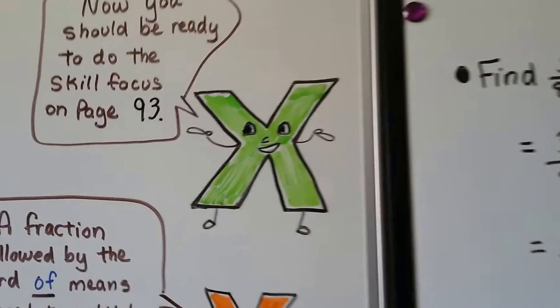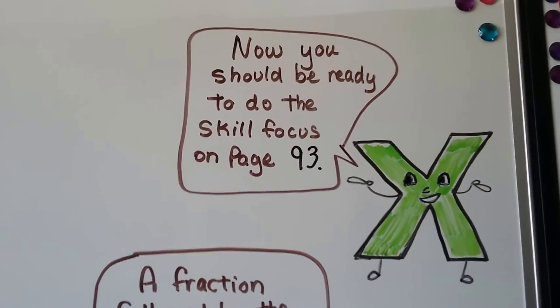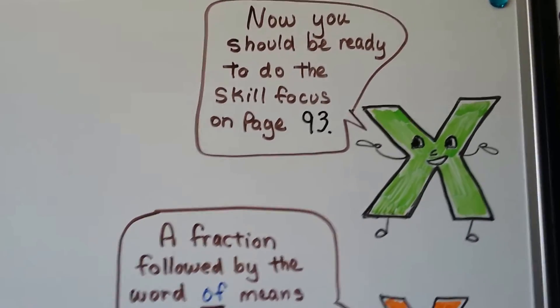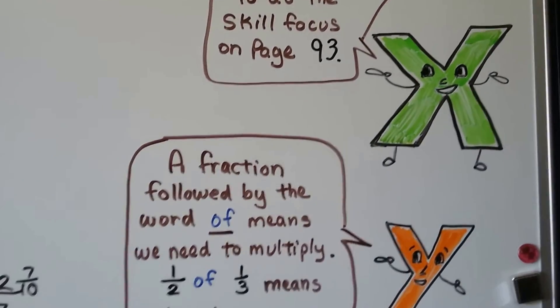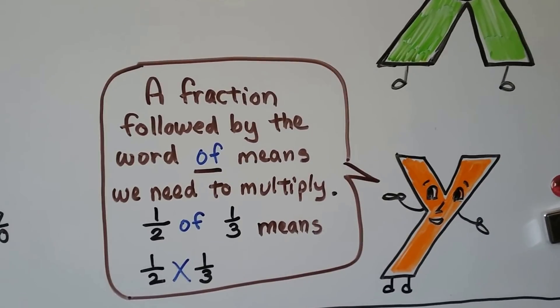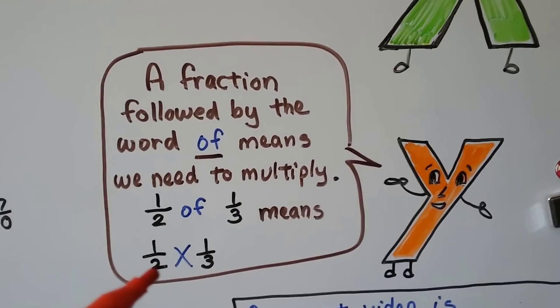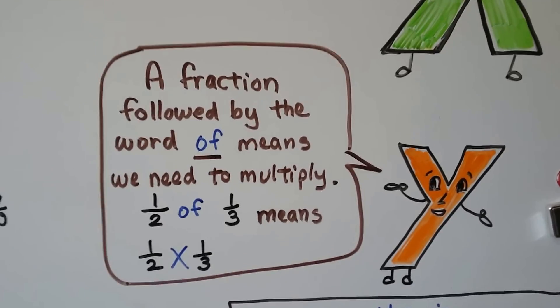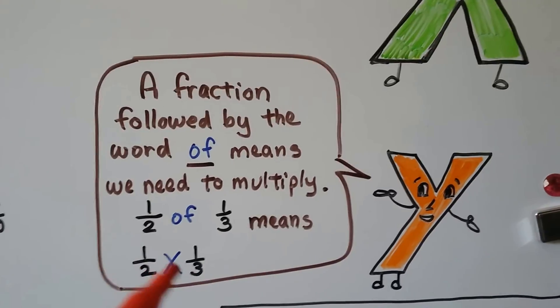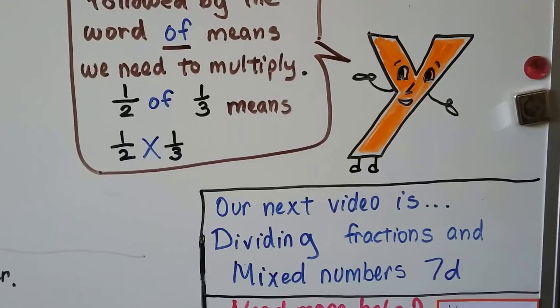So now you should be ready to do that skill focus on page 93. And I hope you do well. If you have a problem, watch this video again. It's no big deal. It's just a few minutes out of your life, but it's going to guarantee you success. And remember that a fraction followed by the word 'of' means to multiply. So if you see 1/2 of 1/3, it means 1/2 times 1/3. She had half of a third yard of fabric. Well, you multiply 1/2 times 1/3.